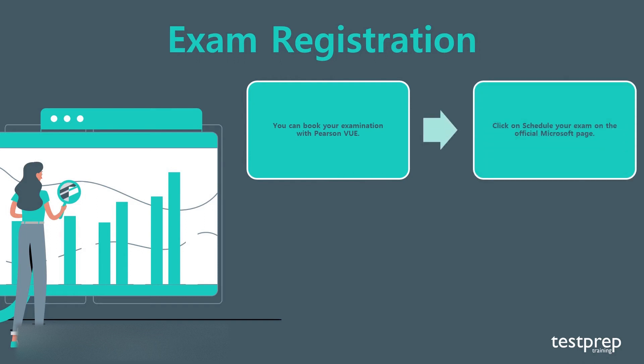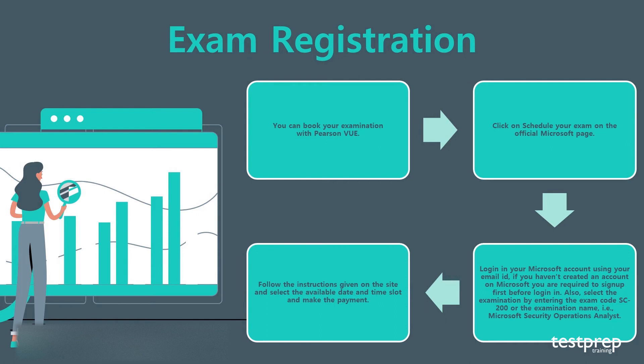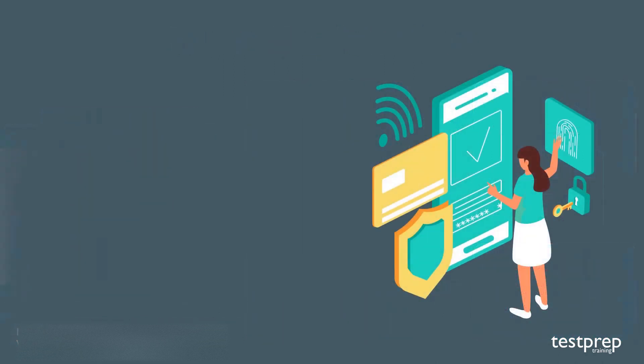Exam registration: first, you can book your examination with Pearson VUE. Second, click on 'Schedule your exam' on the official Microsoft page. Third, log in to your Microsoft account using your email ID — if you haven't created an account, sign up first. Select the examination by entering the exam code SC-200, or the examination name 'Microsoft Security Operations Analyst.' Fourth, follow the instructions, select an available date and time slot, and make the payment.